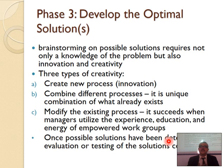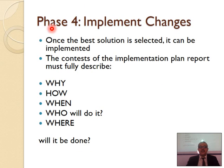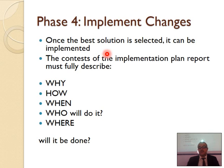Relating this to your project — you're going to observe a process, document it, find an opportunity, and think of a creative optimal solution. In your project, you will do phases one, two, and three. For phase four, you can't implement it, because once the best solution is selected, it can't actually be implemented in your project.